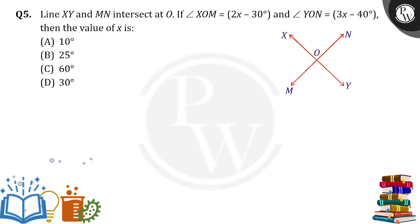Angle XOM is given as 2x minus 30 degrees and angle YON is given as 3x minus 40 degrees. Then the value of x is how much?